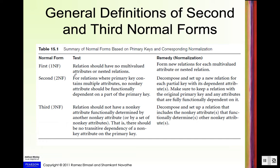The test for first normal form is simple. First normal form only requires that in the relational schema every value will be atomic. For any attribute, there is not going to be any composite value or any multi-value. The only requirements are no multi-valued attribute and no nested relation.